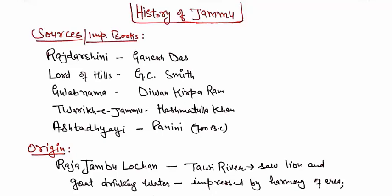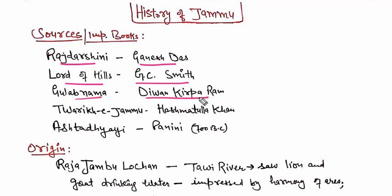First, we will see some important sources or books that tell us about the history of Jammu. The first one is Raj Darshini, which was written by Ganesh Das. Then, The Lord of Hills written by G.C. Smith. Gulab Nama written by Diwan Kirpa Ram, Tariqe Jammu by Hashmatullah Khan, and Ashtadai by Panini.